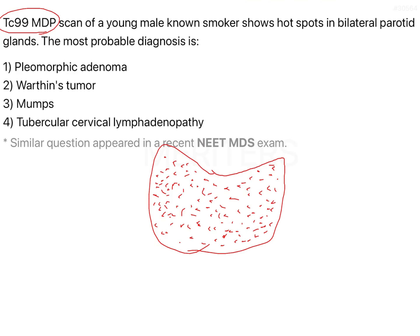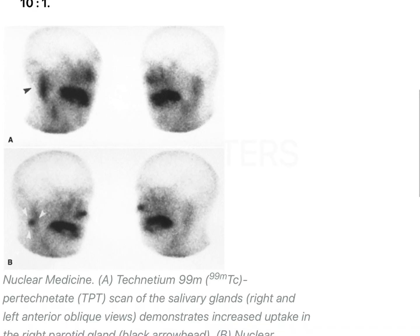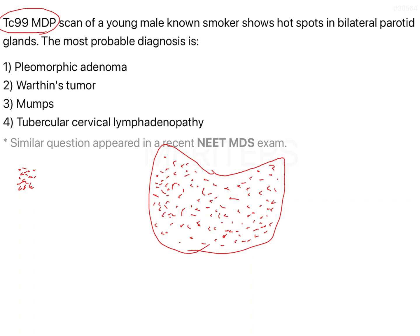In our question, it is bilateral parotid glands — both parotids have taken up the technetium scan with hotspots. A hotspot appears dark while normal tissue appears white. Hotspots on both sides indicate some pathology, most likely a neoplasm — either malignant or benign. Tubercular cervical lymphadenopathy can be ruled out because it involves lymph nodes, not glands.